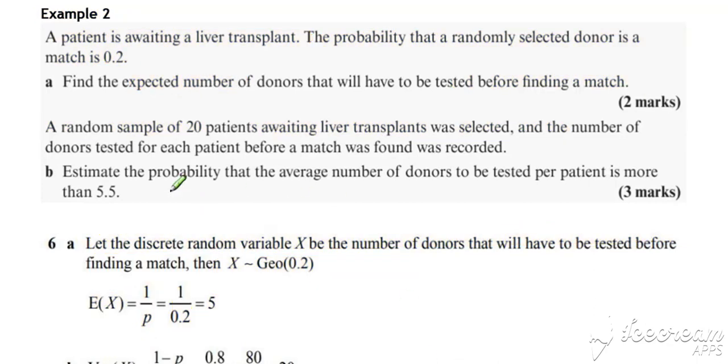Now in part B of this question, we've got 20 different observations taken from geometric distributions. For patient 1, we look at the number of donors tested before a match was found, and then the same for patient 2, patient 3, and so on. We're going to end up with 20 observations.